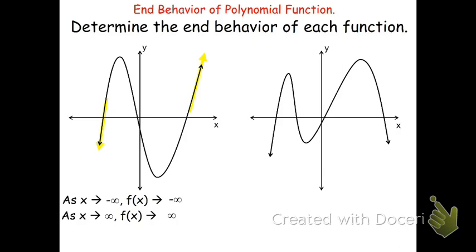Let's take a look at the other example. As x approaches negative infinity — meaning as we move to the left — the graph is going down, so f of x is going to negative infinity. On the other side, as we move to the right, as x goes to positive infinity, f of x is still going down — meaning f of x is still going to negative infinity. Both ends go to negative infinity on this problem, because it's an even degree polynomial. Even degrees would be like x squared, x to the fourth, x to the sixth, and so on.